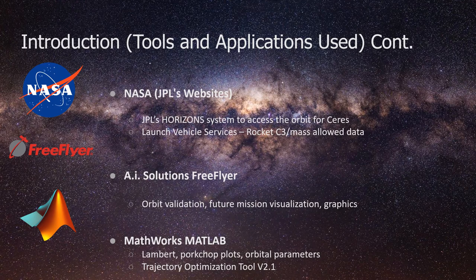For this project we have used several tools and applications, including but not limited to NASA JPL's websites, where we used the JPL Horizons system to access the orbit for Ceres and also figure out the launch vehicle services, the rocket C3 versus mass allowed data. We have also used AI Solutions FreeFlyer for orbit validation, future mission visualization, graphics, and to make sure our calculations and assumptions were correct. One of the main applications that we used is MathWorks MATLAB for Lambert pork chop plots and orbital parameters.